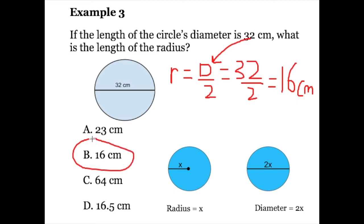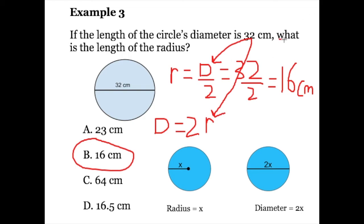If you chose answer choice C, the mistake you may have made was using the formula D equals 2r. If you used the formula for diameter and mistakenly plugged 32 in for the radius, you would have done 2 times 32, which is 64. Note that that's incorrect because the question asks us to find the length of the radius.